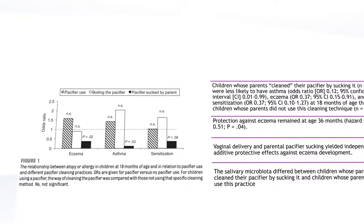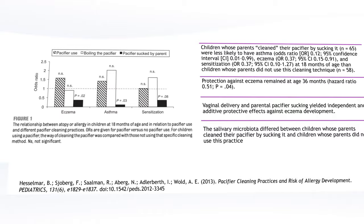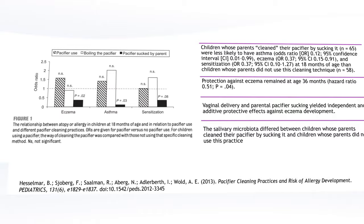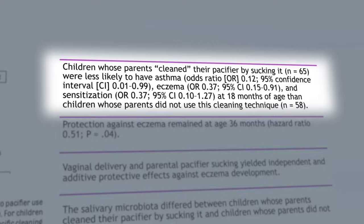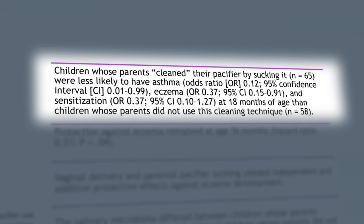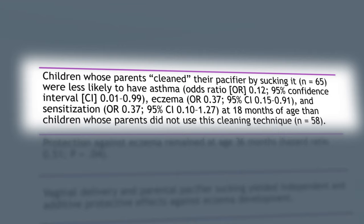Later in development, children who receive microbes through the oral passage show important benefits. A study looking at pacifiers found that when parents cleaned the pacifier by sucking it before putting it back in the baby's mouth, those children were less likely to develop immune conditions later in life compared to kids whose pacifiers were sterilized. So we actually rely on the passage of mouth microbes from parents to their babies to develop a healthy immunological response. This brings up the very important concept of oral biofilms.